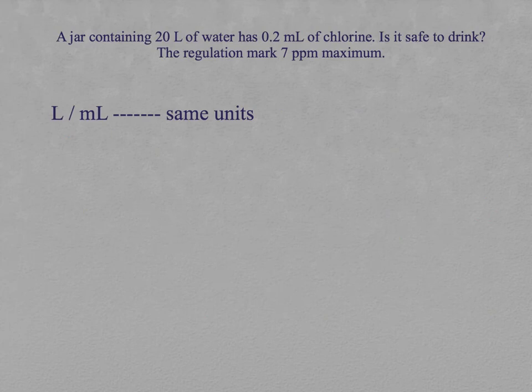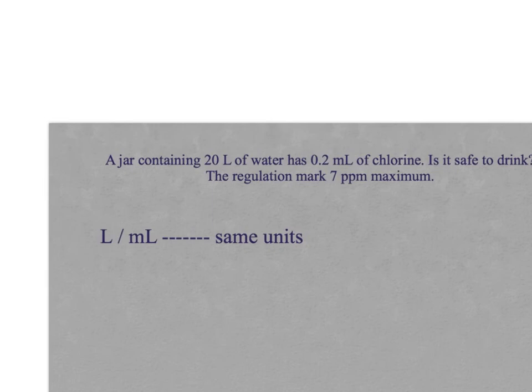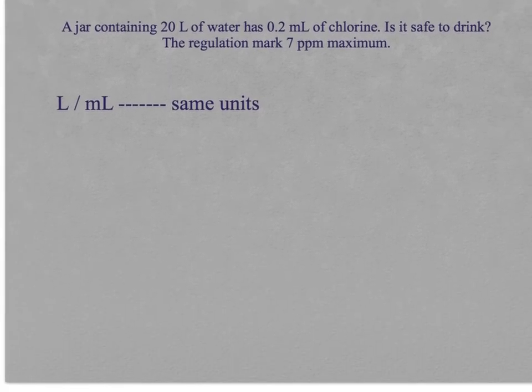Let's do this exercise together. A jar containing 20 liters of water has 0.2 milliliters of chlorine. As you know, chlorine is added to drinking water as disinfectant. And the question is if it is safe to drink. The regulation marks seven parts per million as maximum. Let's analyze the problem. Now our solution is this jar with 20 liters of water. It has 0.2 milliliters of chlorine.